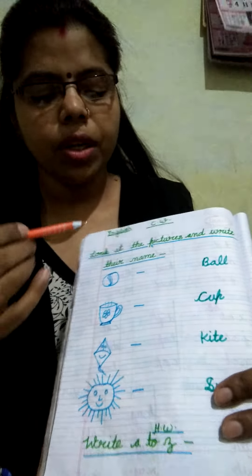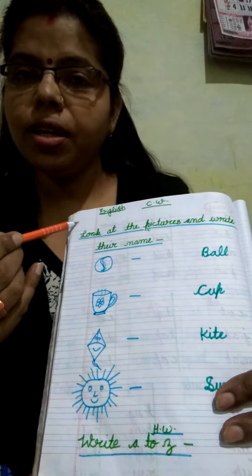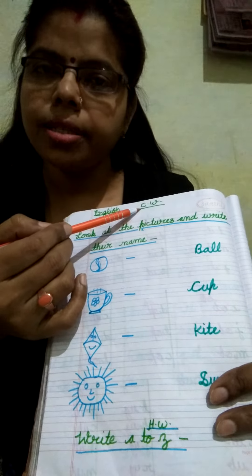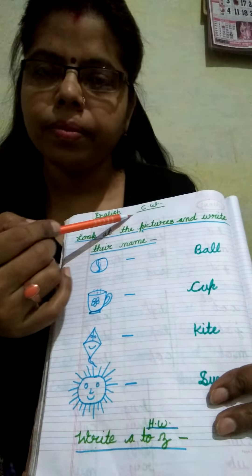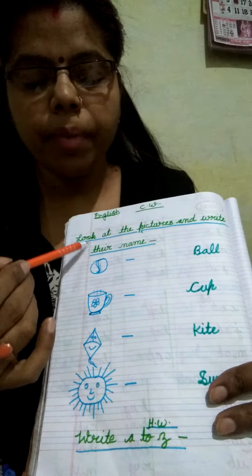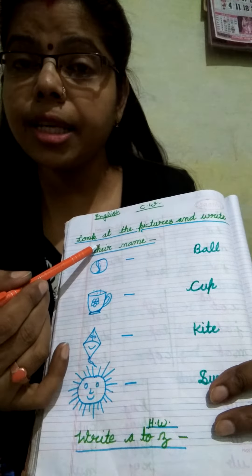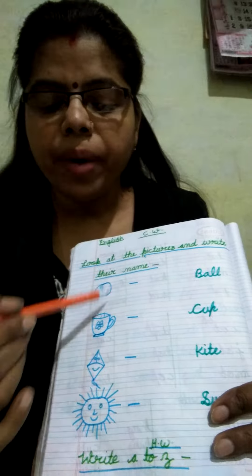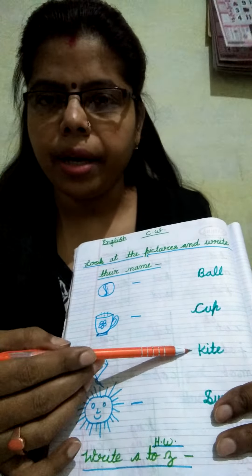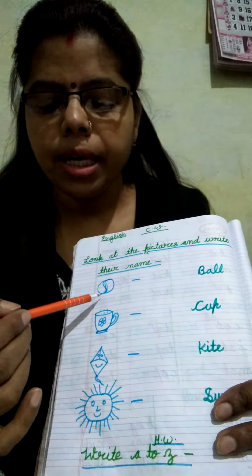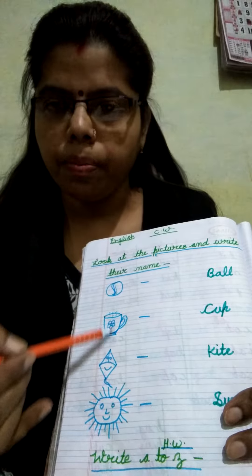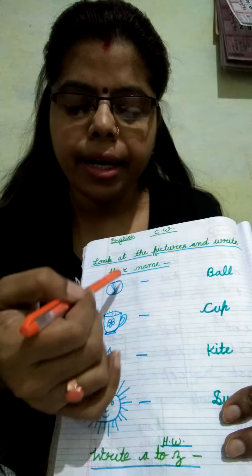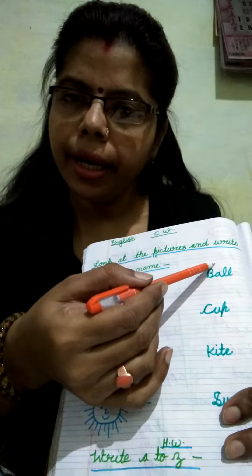Okay, students. First of all, here you will mention the date. Next, CW. Today I am going to teach you English — pictures to identify and name write. This side I have made some pictures, and this side you have to identify and write the name.